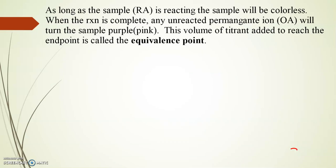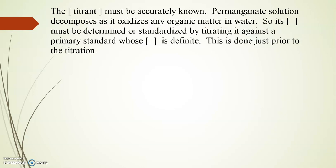So to summarize, as long as the sample is reacting, the sample will be colorless. When the reaction is complete, any unreacted permanganate ion will turn the sample purple, or very pale pink. This volume of titrant added to reach the endpoint is called the equivalence point.